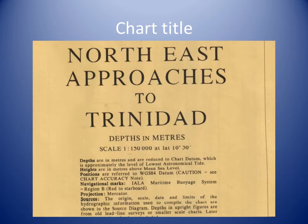Nautical charts all have a title giving details of the countries and areas covered on the chart. The title tells us what units the depths and heights are in, and what voyage system is in use. This is the chart title for chart BF500.